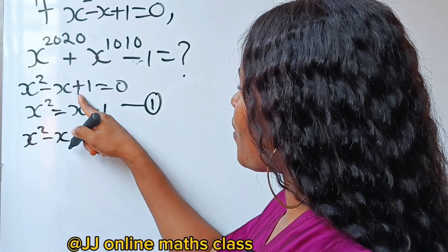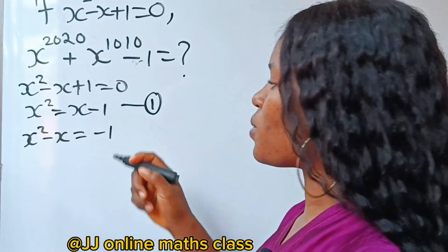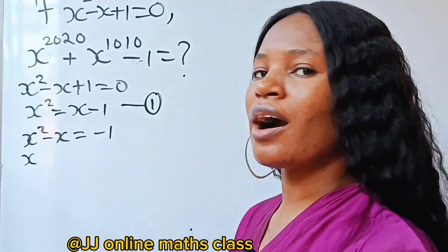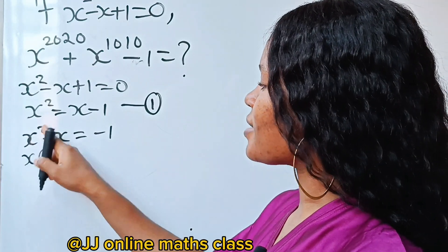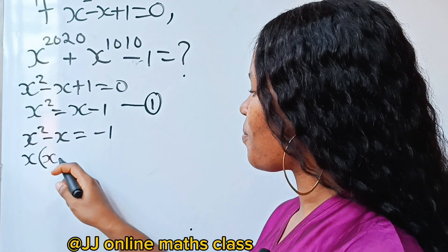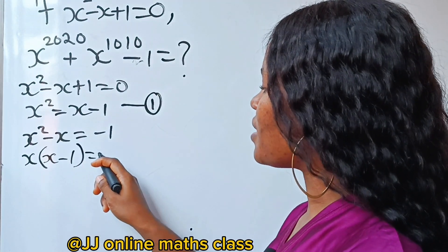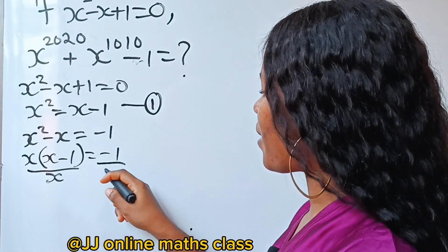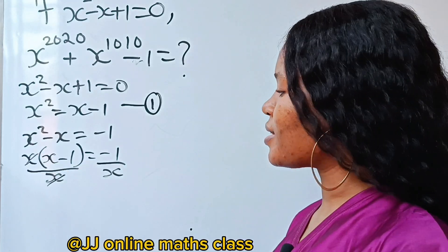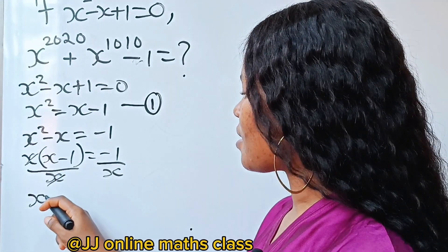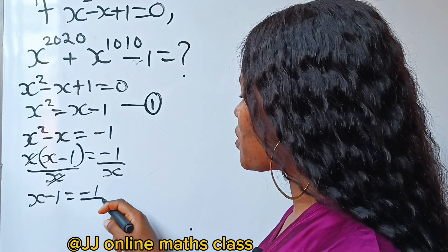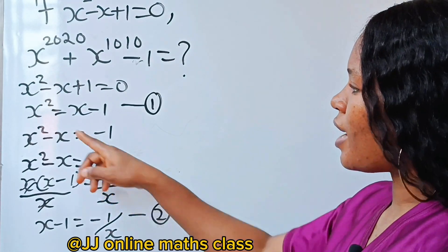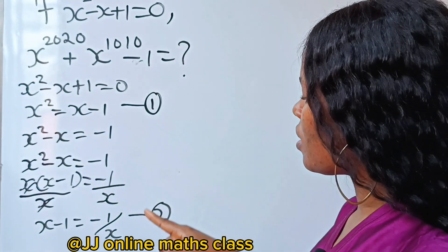From the main equation, if we transfer the one to the other side we get x squared minus x equals minus one. Factoring out x gives x(x minus 1) equals minus one. Dividing both sides by x: x minus one equals minus one over x — let's call this equation two.